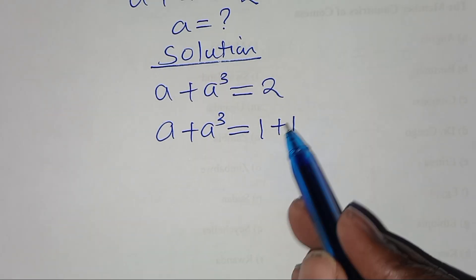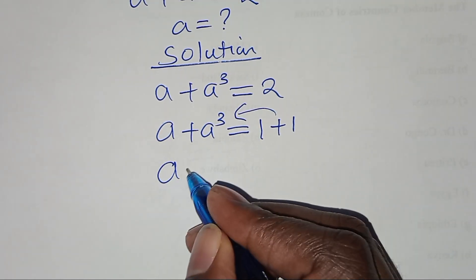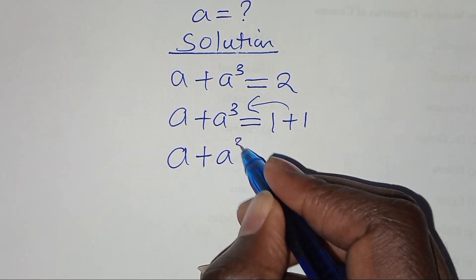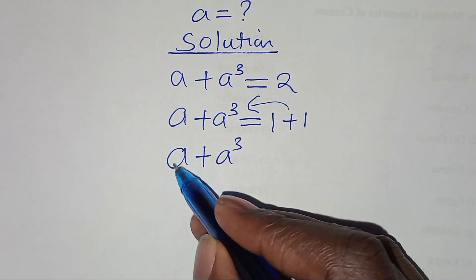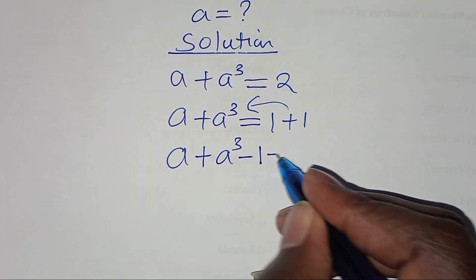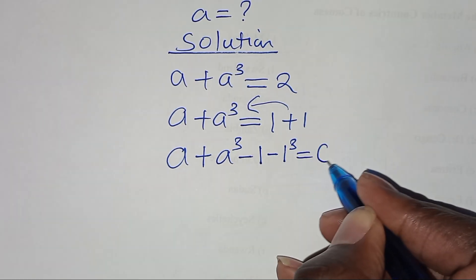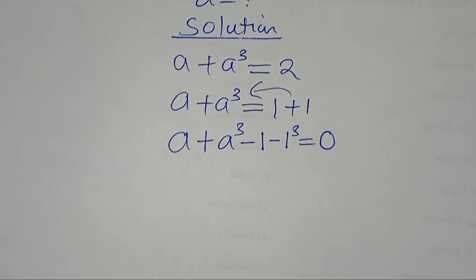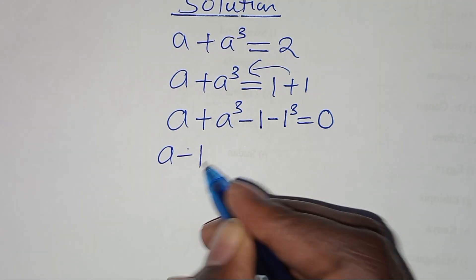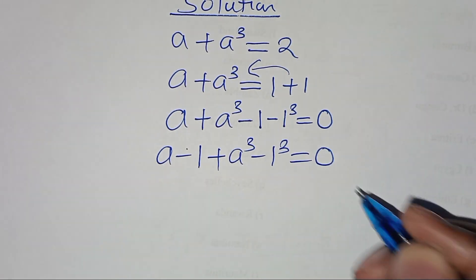So, taking 1 plus 1 on the left hand side — we have a, so taking 1 plus 1 on the left hand side, this means we have a cubed, that is a plus a cubed, subtract 1, subtract 1. We can express this as a cubed minus 1, and this is equal to 0. So this means we can rearrange this as a minus 1, plus a to the power 3 minus 1 to the power 3, this is equal to 0.